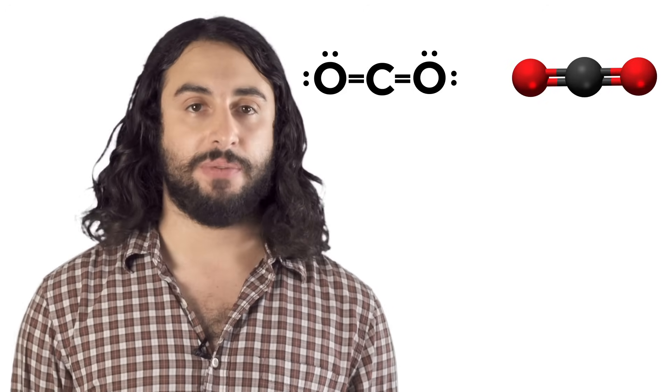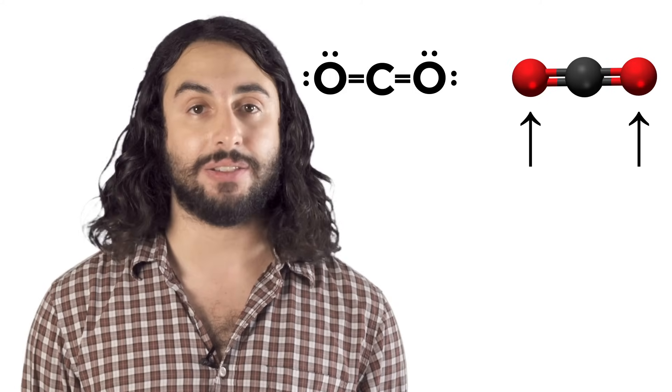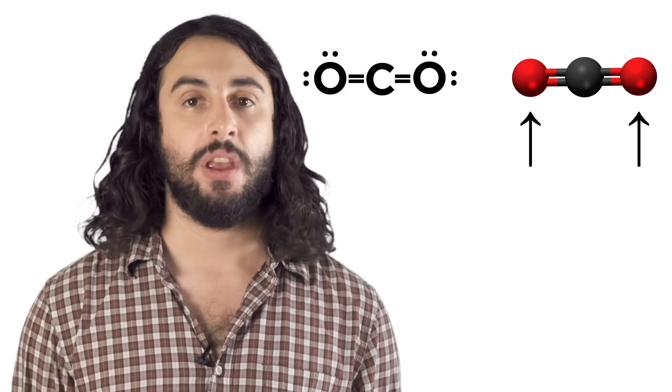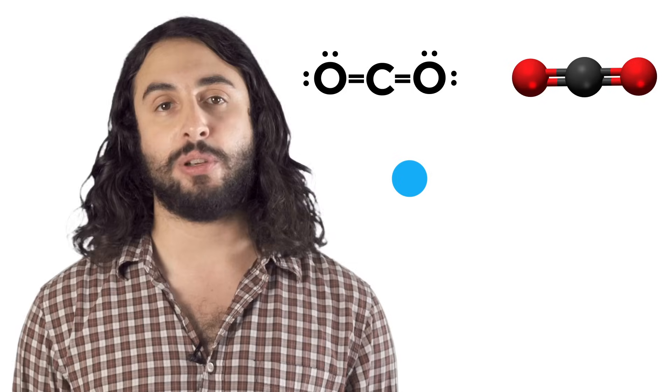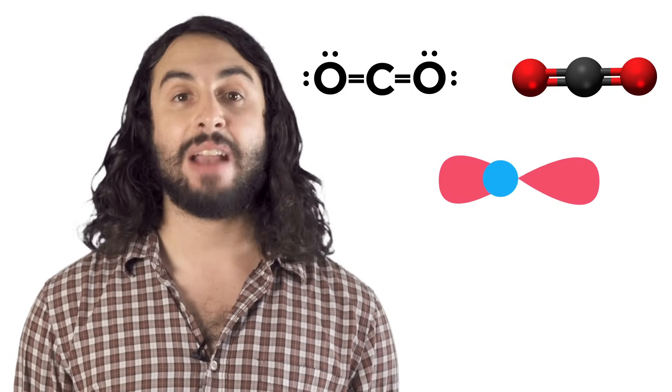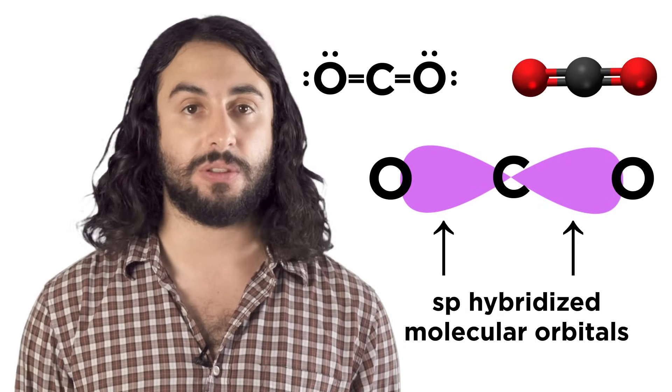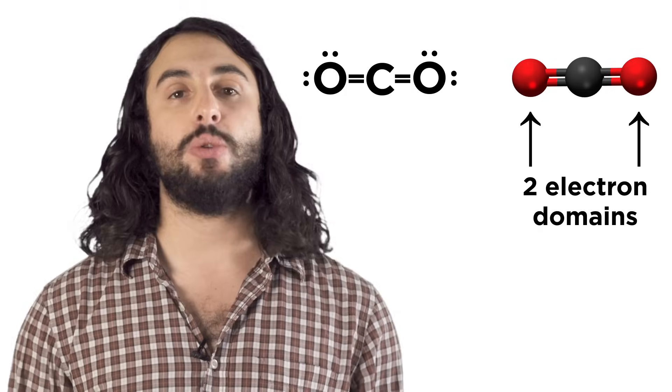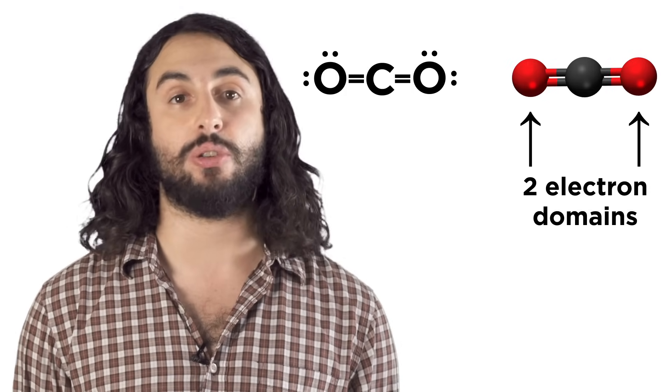Take carbon dioxide, for example. The carbon atom has two electron domains, or areas of electron density, extending from it. In order to participate in these bonds, the carbon takes an s orbital and a p orbital and hybridizes them, forming sp hybridized molecular orbitals. For now, we can just count the number of electron domains and use that many atomic orbitals to describe the hybridization of the central atom in a molecule.